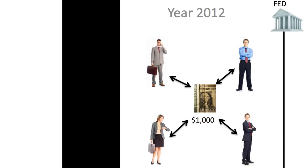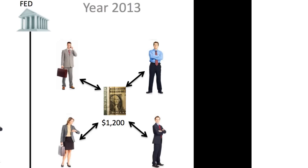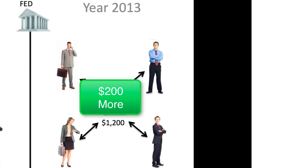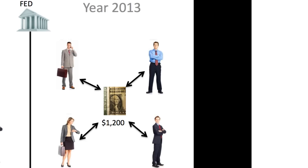Now let's look at year 2013. A change occurred: instead of $1,000 between these four people, the federal government put $1,200. Same number of people, different supply of money. As they're working and there's more money in the system, the value they'll charge for services or products will be higher. So milk that was $4 when there was $1,000 in the system could now be $4.13 when there's $1,200. That's how the Fed gradually increases the money supply and inflates the money.